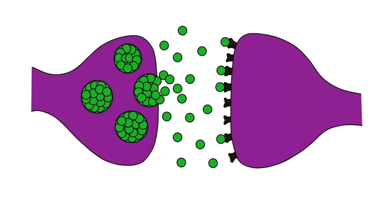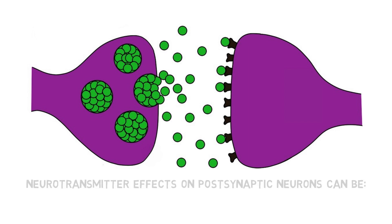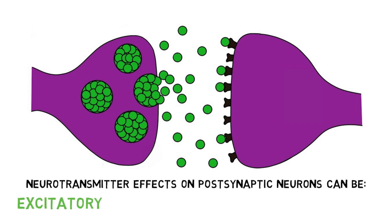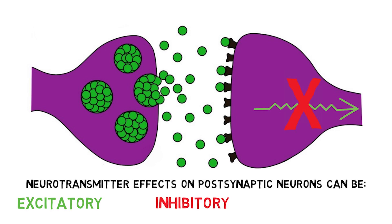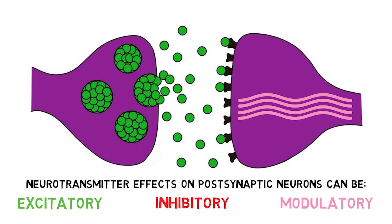Thus, when neurotransmitters bind to receptors, they cause some action in the postsynaptic neuron. In general, that action might be excitatory, meaning it increases the likelihood the postsynaptic neuron will fire an action potential, or inhibitory, meaning it decreases the likelihood the postsynaptic neuron will fire an action potential, or it might be a modulatory effect, where it influences the functions of a neuron in more nuanced ways.